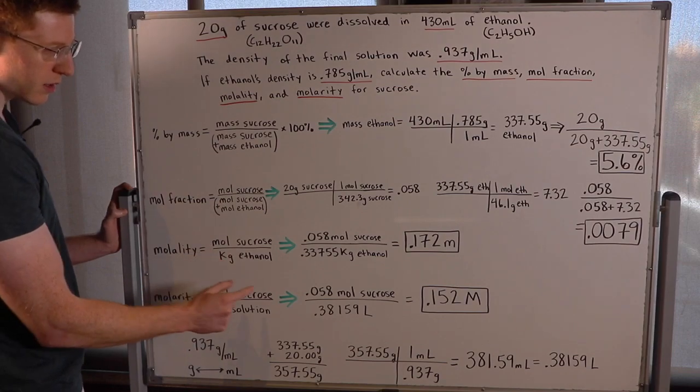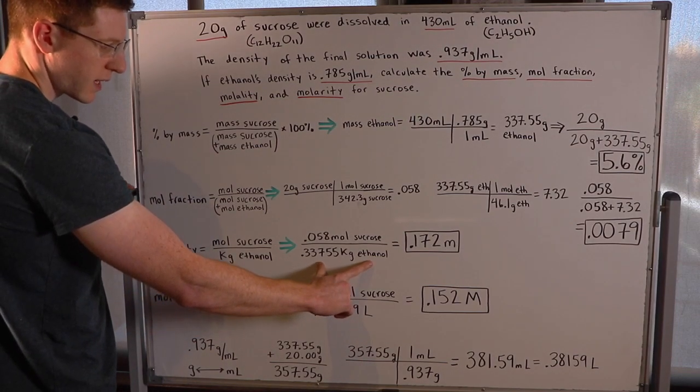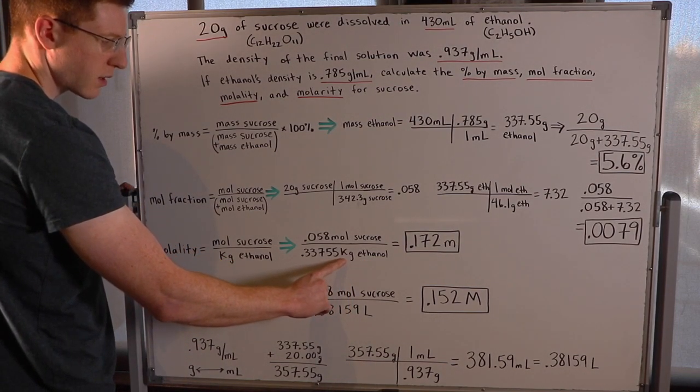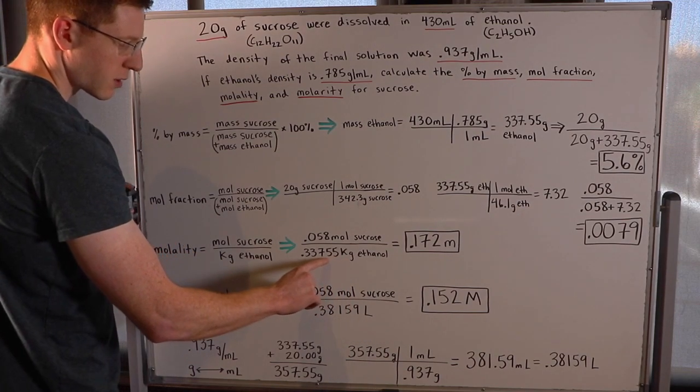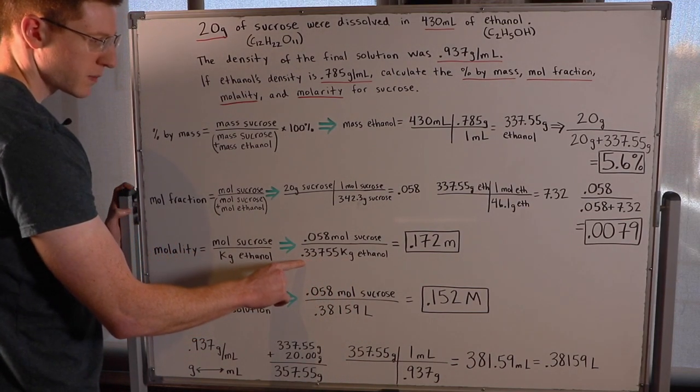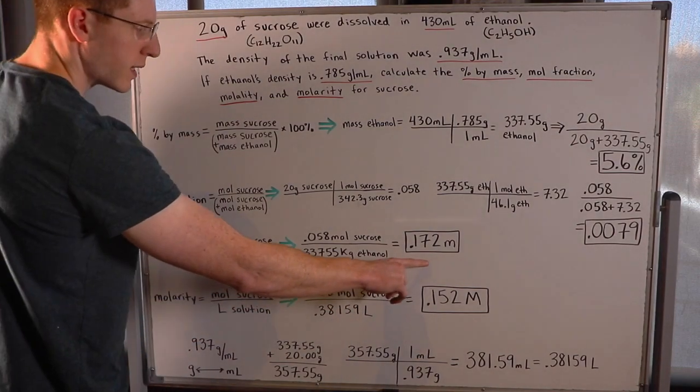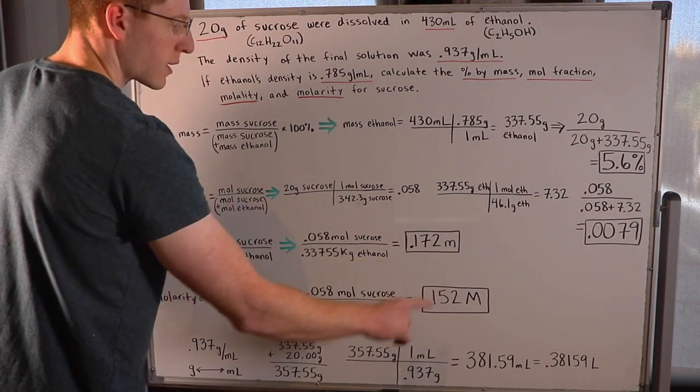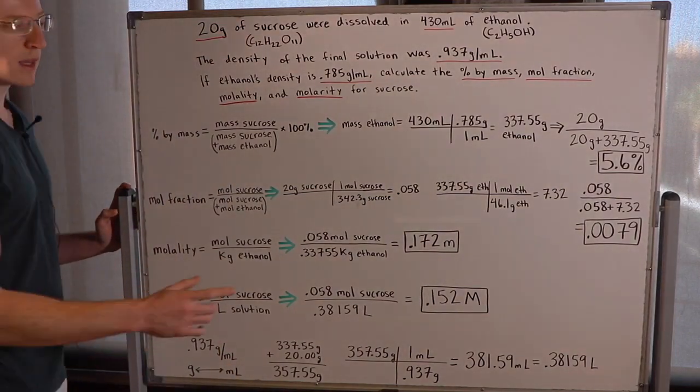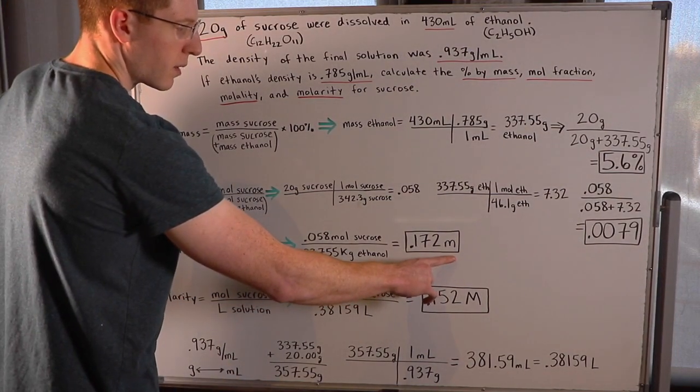So 0.058 moles of sucrose will go in the numerator. And we know grams of ethanol. By simply dividing by a thousand, I was able to convert it to kilograms of ethanol. I just moved the decimal place over three places to the left. And I found that the molality for sucrose was 0.172 lowercase m. That lowercase m is the symbol for molality.